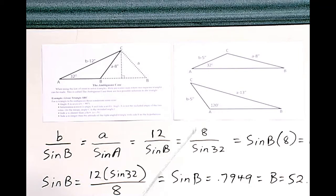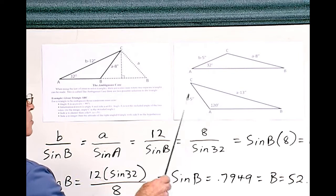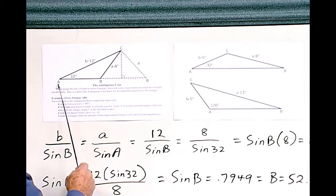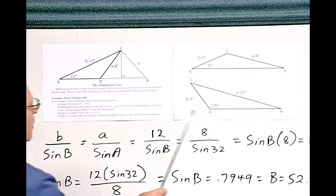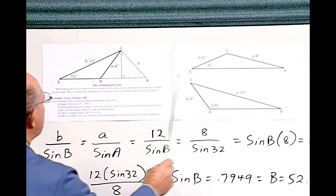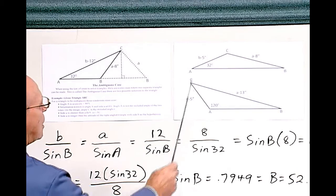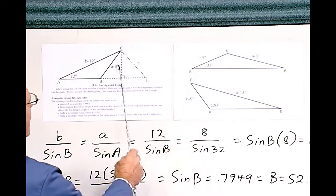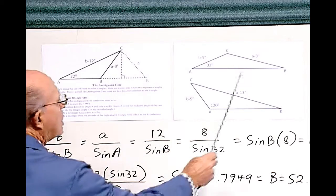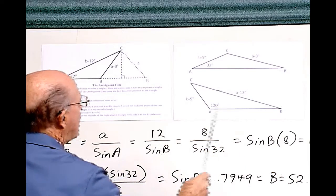On the board, we have three triangles with sides and angles in the same positions. Angle A is 32 degrees here, 120 degrees here, and 32 degrees here. B is 12 inches, 5 inches here, and 5 inches here. And A is 8 inches here, 8 inches here, and 13 inches.